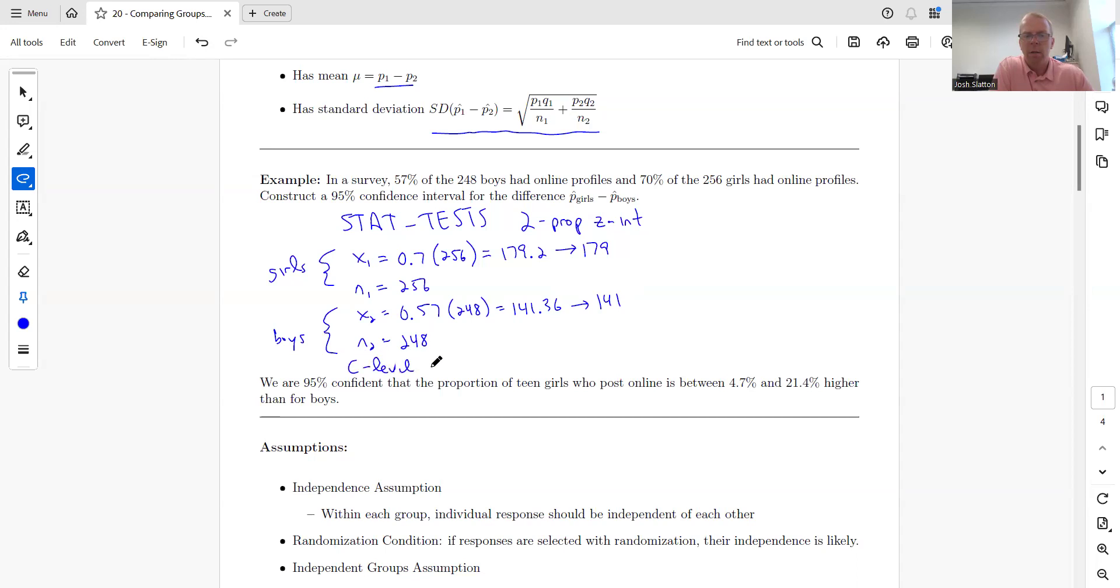Then we have the c level, which is 0.95. We put that in the calculator, and you can see the answer here: 0.047 to 0.214.